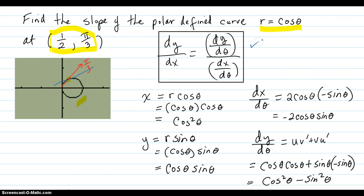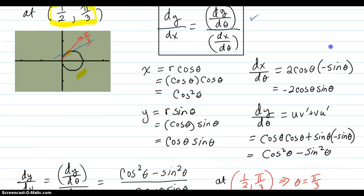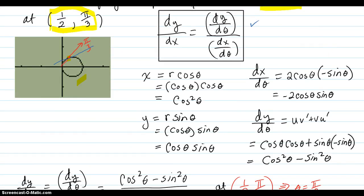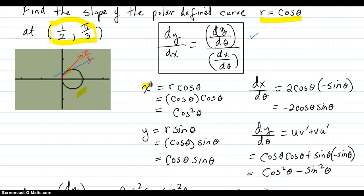So you have this definition here: dy/dx is dy/dθ divided by dx/dθ. You've seen x is defined as r cosine theta. Now the r that's in this particular problem, the formula for r in this particular graph is that r is equal to cosine theta.